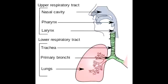Describe what would happen if you aspirate a peanut while upright. If you aspirate a peanut while upright, because the right bronchus is wider and straighter, the peanut will go to the lower portion of the right inferior lobe.